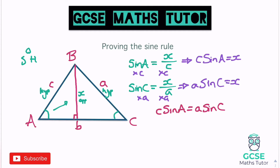We now have something resembling the sine rule. To turn it into the actual sine rule, I divide both sides by sinC and sinA in one step. Dividing by sinC removes it from the right and places it under c·sinA on the left; dividing by sinA removes sinA from the left and puts it as a denominator on the right. What we end up with is c/sinC = a/sinA.